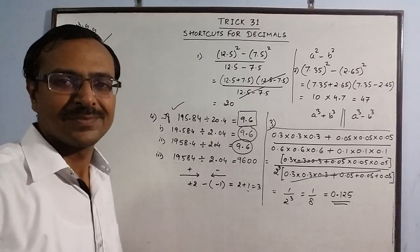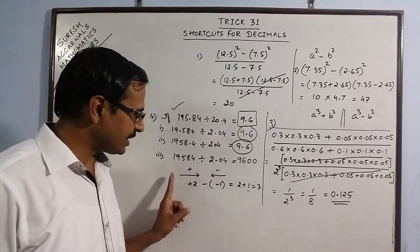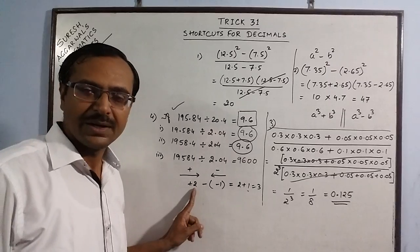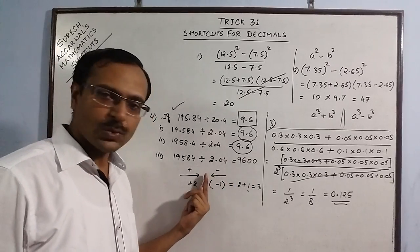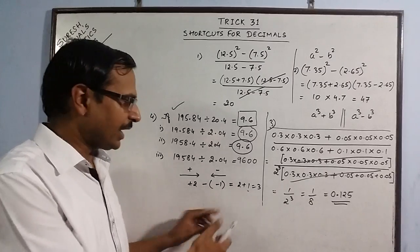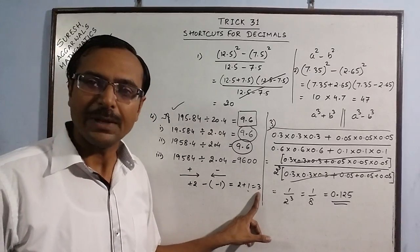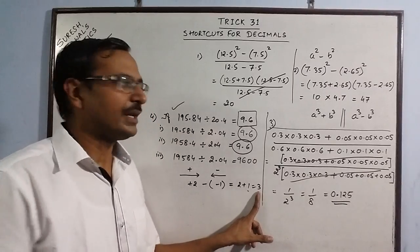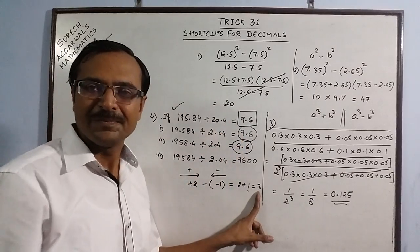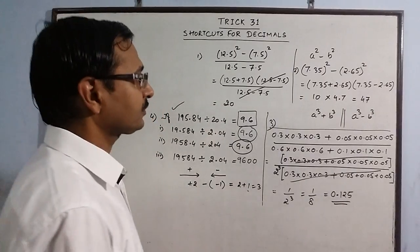If the decimal place shifts towards the right, the shift is taken as positive; if towards the left, it is negative. Subtract the two shifts to get the net shift in decimal place. If the net shift is positive, move the decimal to the right; if negative, move it to the left. This is one more type of question commonly asked in competitive exams.